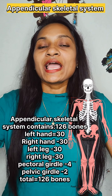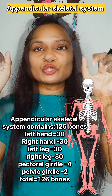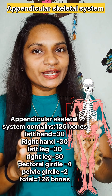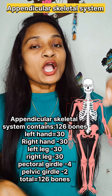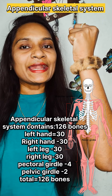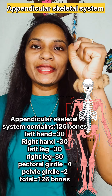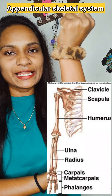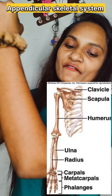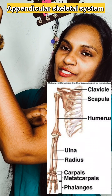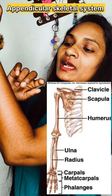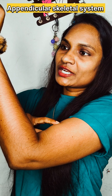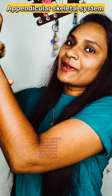So 29 skull bones plus 25 ribcage bones plus 26 vertebral column bones gives a total of 80 bones in the axial skeletal system. Next, coming to the appendicular skeletal system.